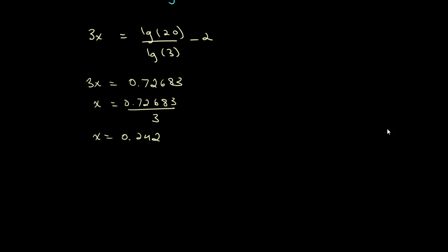And once again, we round to the nearest two decimal places. So we get x is equal to 0.24.